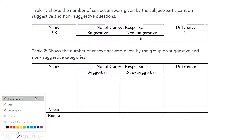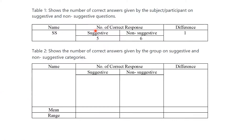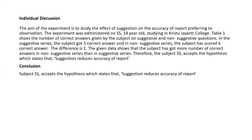The total number of correct responses for each category are collected in a table. For one sample client, under the suggestive category the client responded correctly to five questions, and under non-suggestive the correct responses were six. To calculate the difference, we subtract suggestive correct answers from non-suggestive; the difference is one. This table is used for individual discussion. For group discussion, we draw the table and calculate the mean and range of the data.